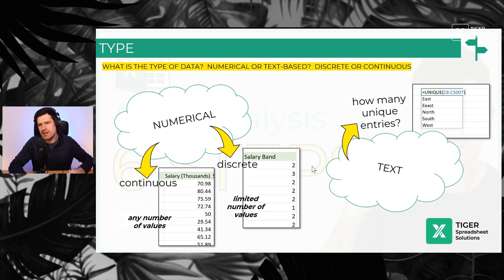So the first question, are we dealing with numerical data or text data? Hopefully a fairly straightforward question. More likely you're dealing with numbers. So the next question for numbers is, are we dealing with continuous or discrete data? Statistical term alert. Don't worry. We're going to explain them right now.